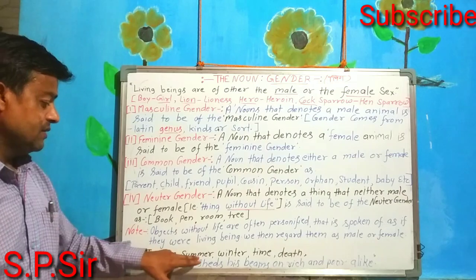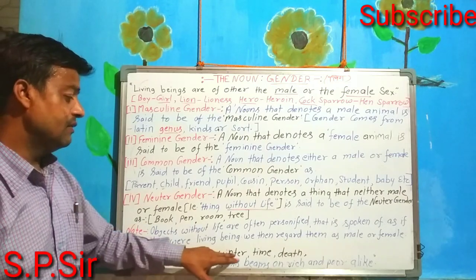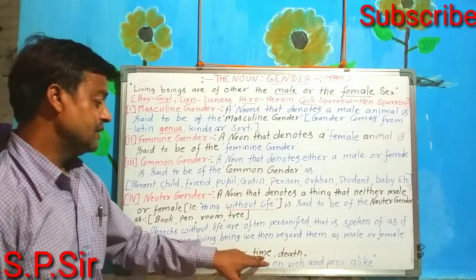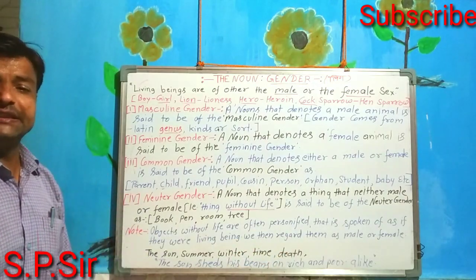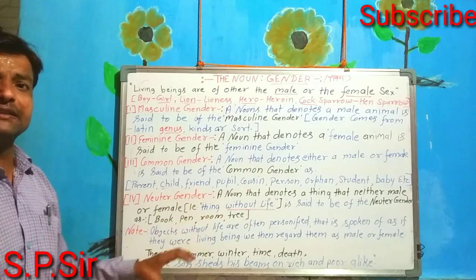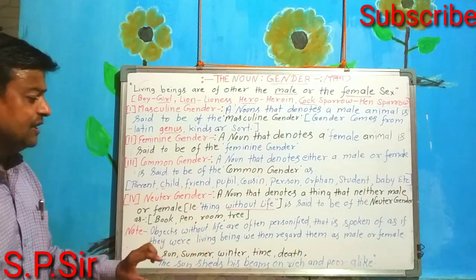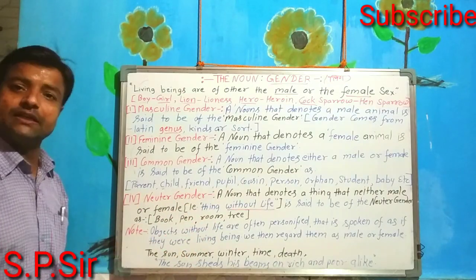For example: the sun, summer, winter, time, and death — these are already represented as living things.